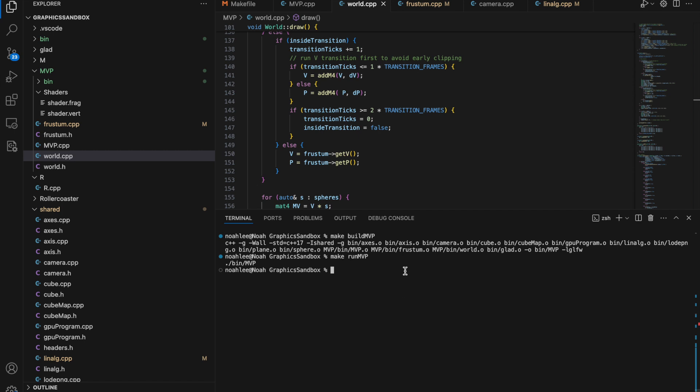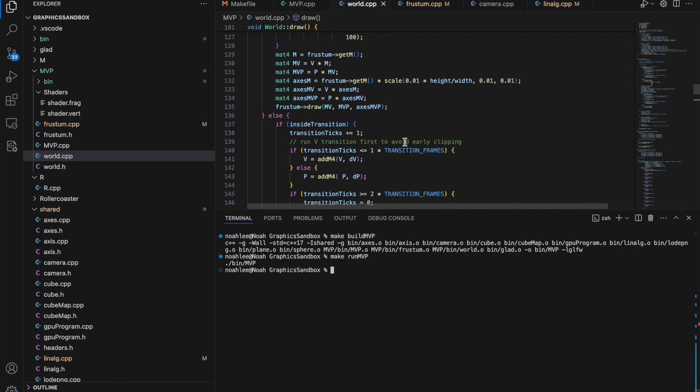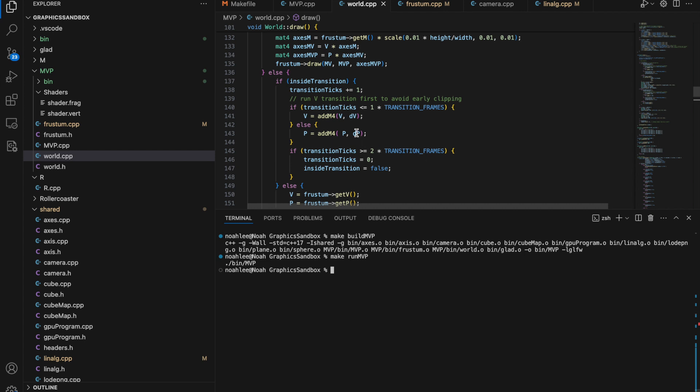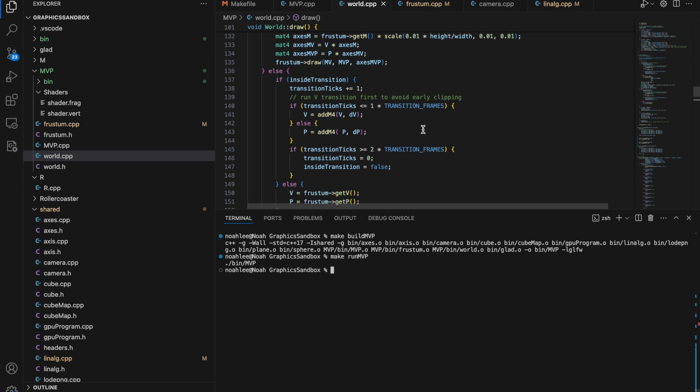One thing I did just through experimenting with this program was actually animate the transition to the internal world viewpoint with 100 transition frames and to do that I built a derivative matrix with the difference between the current VNP matrices and the VNP matrices that I'm transitioning to and it actually had quite a good result in animating the transition to the internal viewpoint and out of the internal viewpoint.